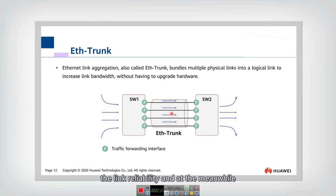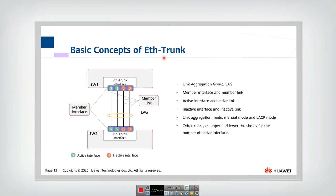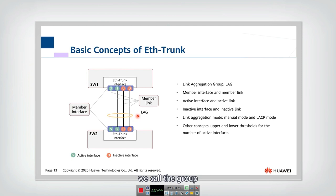We achieve link reliability and at the same time we achieve higher link bandwidth. Given the motivation of EtherTrunk, let's talk about some basic concepts. Here we call this aggregation the link aggregation group, or LAG. This group is composed of multiple separate links.